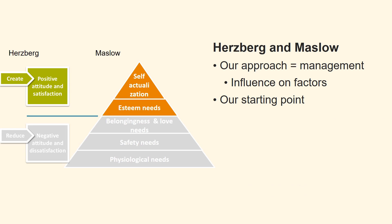Now we move on to consider the next level in both theories. Our starting point is still how Herzberg's two-factor theory affects Maslow's hierarchy. We will now examine how the motivator factors from Herzberg's two-factor theory can affect the two growth needs in Maslow's hierarchy of needs.